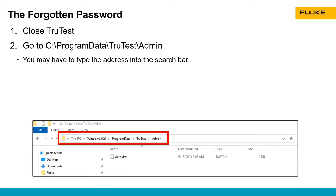First, close TrueTest. Then go to C:/ProgramData/TrueTest/Admin. In most cases you'll probably have to type this in the search bar — you can see the bar highlighted at the top of the window. Just go to your computer's C drive and type in 'program data.' That will bring you to the TrueTest folder, and then the administration folder.